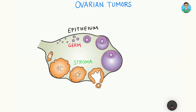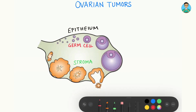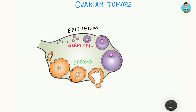Based on the origin of the tumor, we can have epithelial tumors, germ cell tumors, and stromal cell tumors. Apart from that, we have a fourth class — that is metastatic tumors to the ovary — meaning tumors which are coming to the ovary as a part of metastasis.